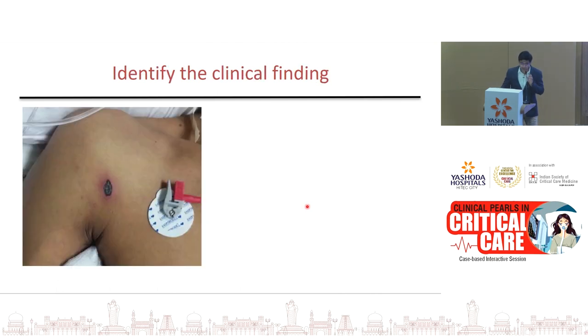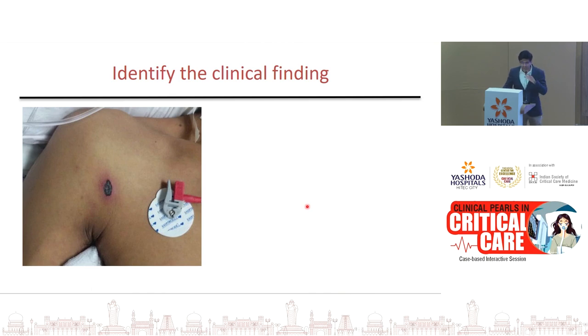Here is a question: identify this young male presenting with fever, altered sensorium, AKI, and hepatitis. The answer is scrub typhus — seen in scrub typhus.